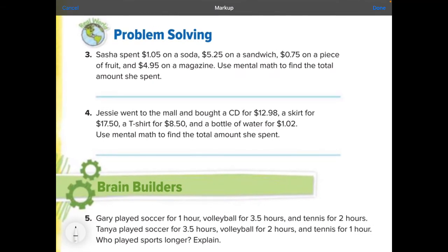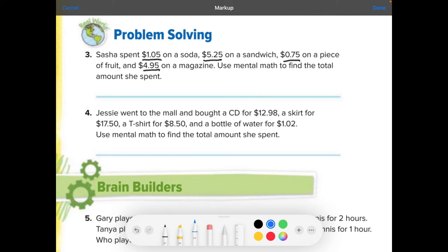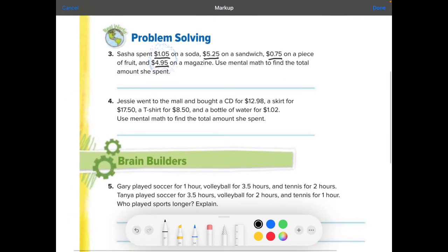Number three, Sasha spent a dollar and five cents on soda, $5.25 on a sandwich, 75 cents on a piece of fruit and $4.95 on a magazine. Use mental math to find the total amount that she spent. So let's think of what's going to be easy to add together. Personally, I think the two easiest ones to add together in my head are going to be these ones right here. I know that said mental math. And if you can do it in your head, go for it. But I don't want to miss any numbers.